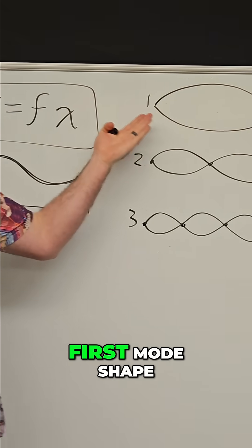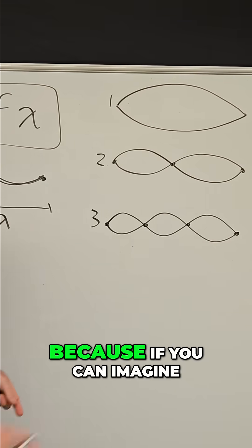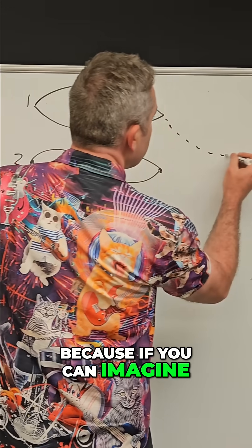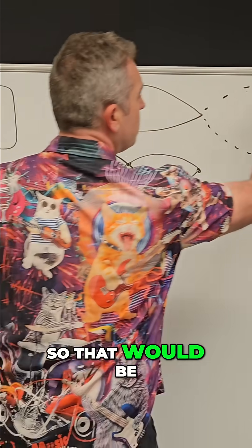And that means if you looked at the first mode shape, this is actually only half of a wavelength, right? Because if you could imagine the rest of the wavelength should come over here. So that would be a full wavelength.